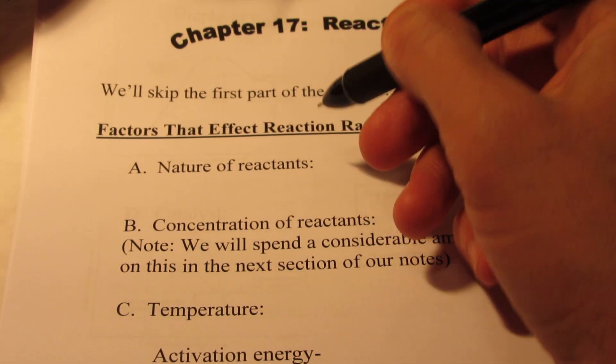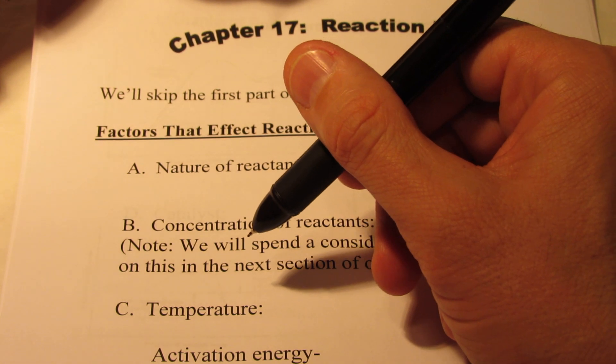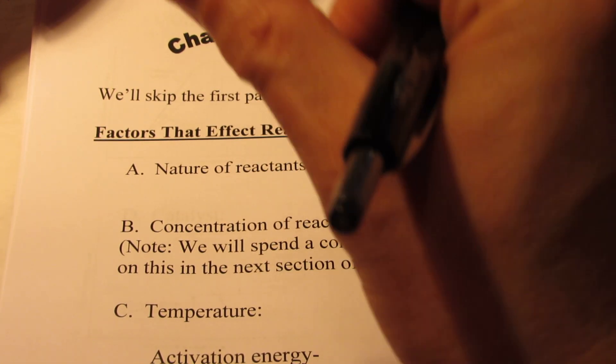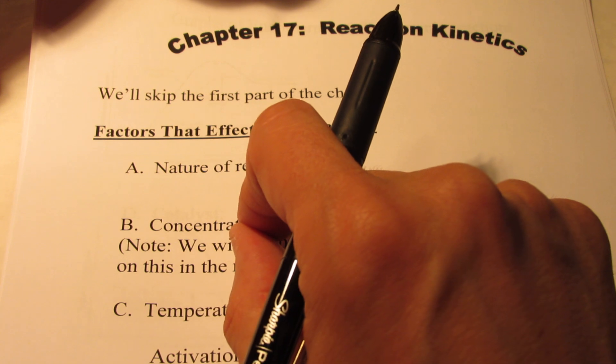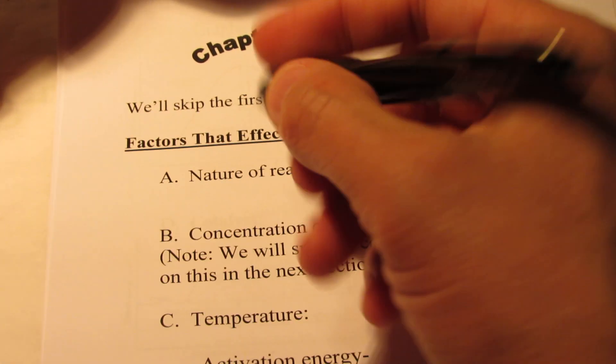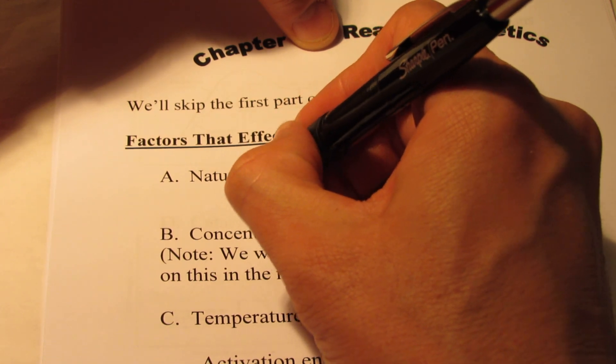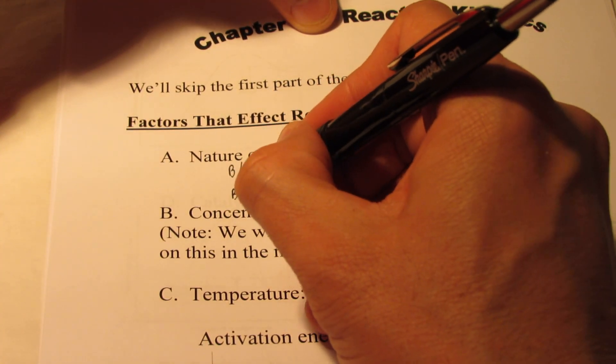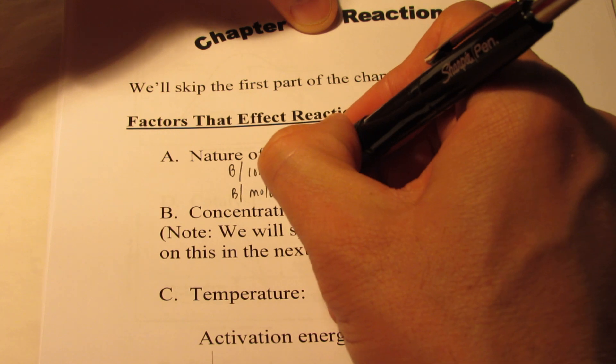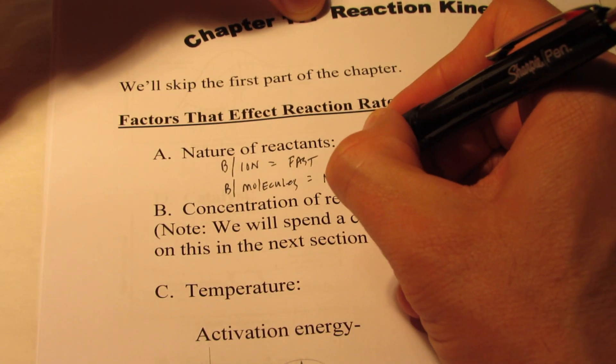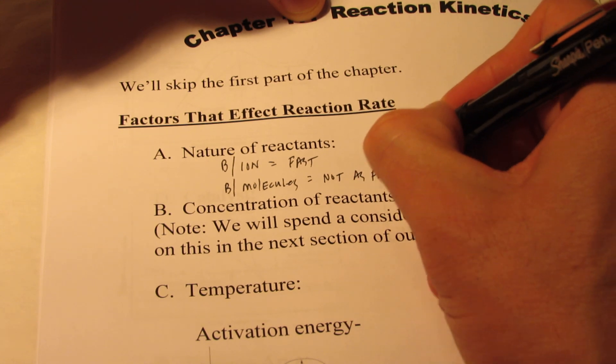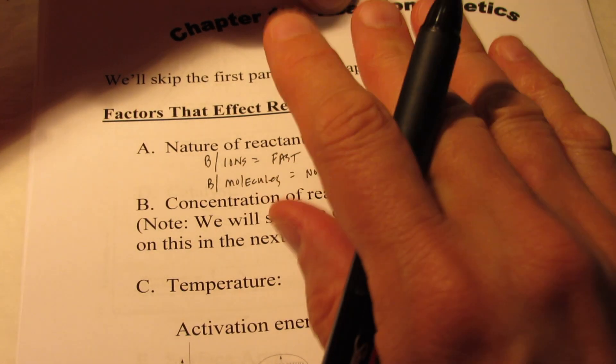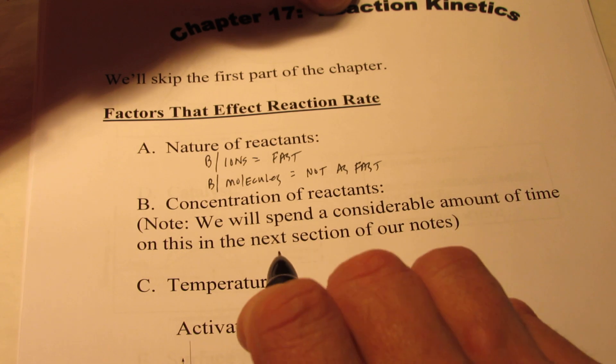First of all, let's think of the nature of the reactants. The lab that we did not too long ago, where we took ions in solution and we mixed them together, you notice those ionic compounds formed almost instantaneously. Reactions between ions are very fast. However, oftentimes reactions between molecules are not often as fast. Molecules tend to react more slowly.